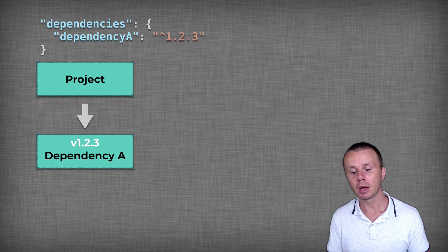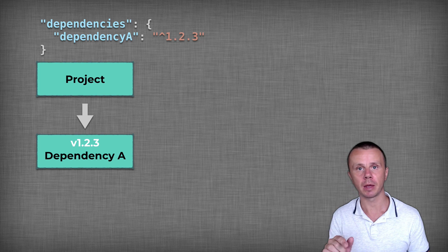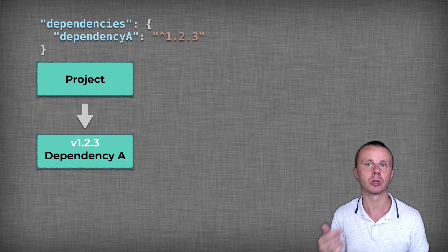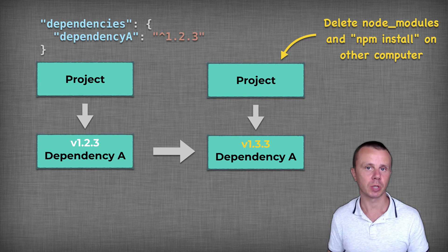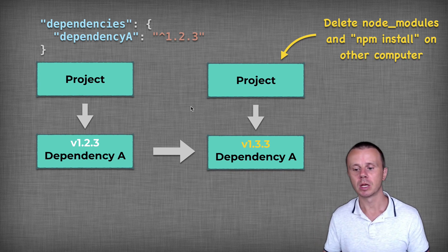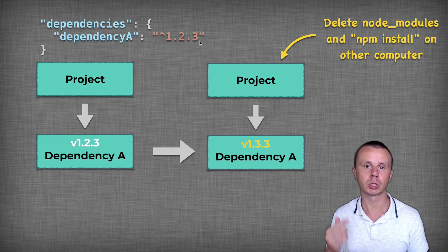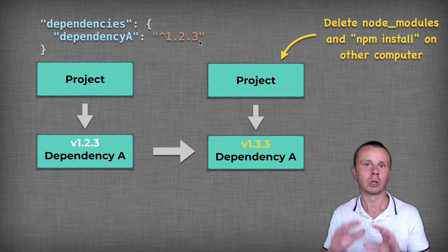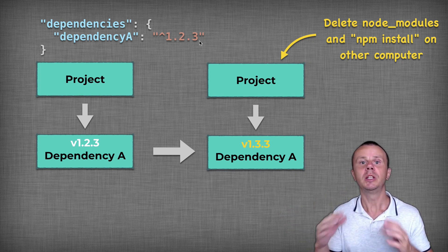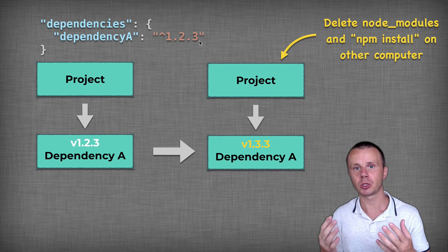Meanwhile, the version of dependency A is updated to, for example, version 1.3.3. In this case, that newer version will be installed on another computer, because it is still compatible with the semver caret 1.2.3 specification. This means that on different computers, different versions of the external package will be installed.